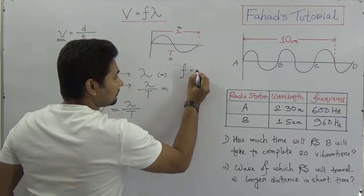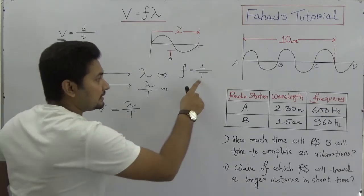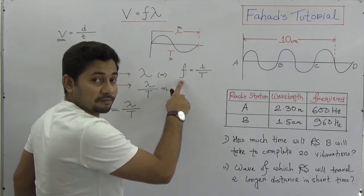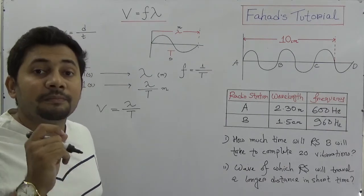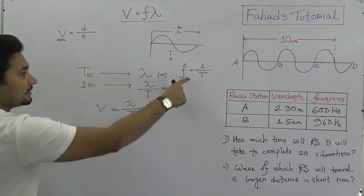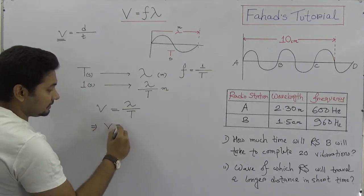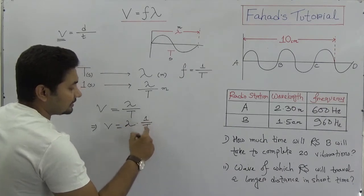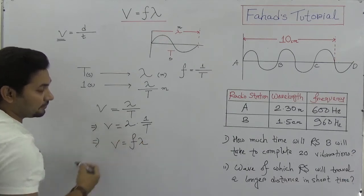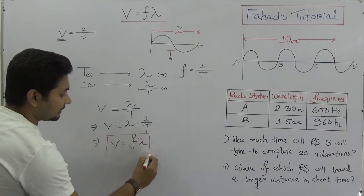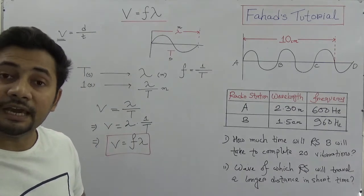We know that F, the frequency, equals 1 divided by T, because T is the time period and frequency means the number of complete vibrations per second. So F = 1/T. Substituting into V = λ/T, we get V = λ × (1/T), which gives us V = Fλ. So V = Fλ is the equation showing the relationship between wave speed, frequency, and wavelength.